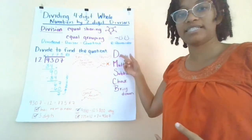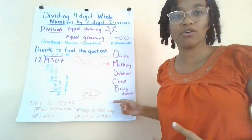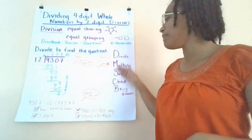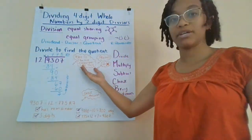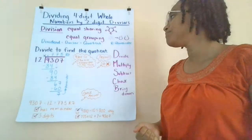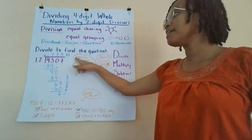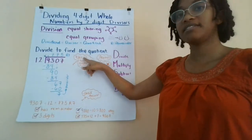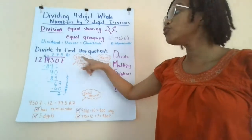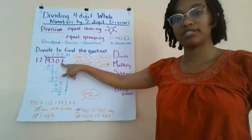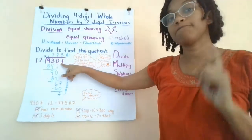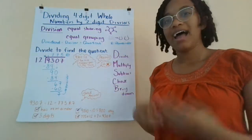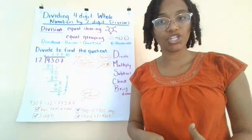Before we start the DMSCB or does McDonald's sell cheeseburgers method, we're going to do some predictions. So first, I remember that the big number goes inside the house. So when I see this number written as 9,307 divided by 12, I know to put the 9,307 in the house because that's the first number.